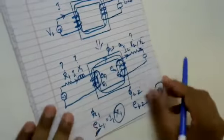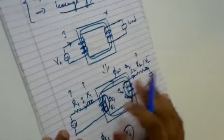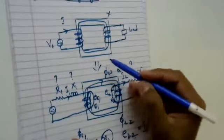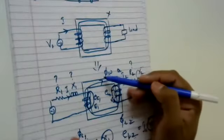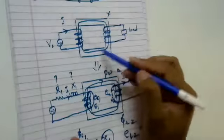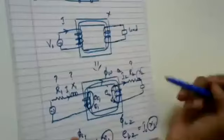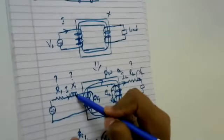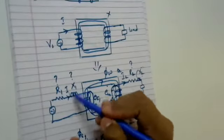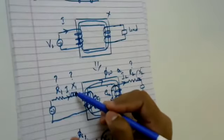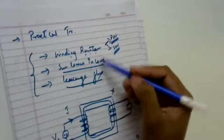So now we are able to understand how we are developing the circuit, because one should know how the transition happens in the transformer from the ideal case to the practical case. One should know the significance of each component — each component represented here has one concept behind it. Now we will build the phasor diagram for this particular circuit under transformer on load condition.